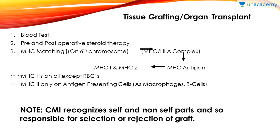Moving to the next part: tissue grafting and organ transplantation. The processes involved are: first, a blood test — blood should be compatible. Then pre and post-operative steroid therapy, which is basically an immunosuppressive therapy, just to suppress your immune system so that it cannot be hyperactive during the graft. Then MHC matching — major histocompatibility complex matching — which is very, very important because if you don't do this, the graft will be rejected by the cell mediated immune system. CMI recognizes self and non-self parts and so is responsible for selection or rejection of graft.